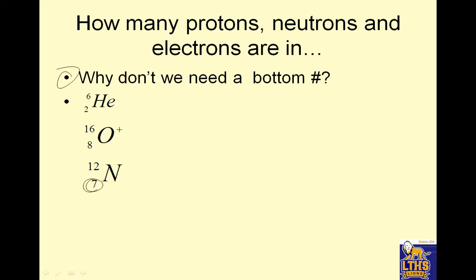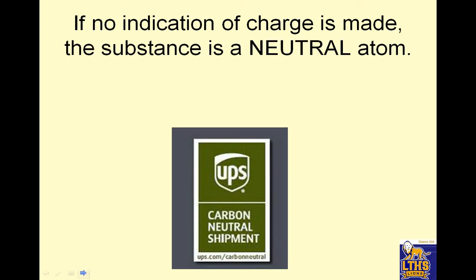By the way, we don't need a bottom number if I just said it's helium 6. Because when you look on the periodic table, you look at helium and the number of protons from the periodic table is there. So you don't need it. You should be able to find that on your own. If no indication of charge is made, the substance is a neutral atom. That means protons equals electrons. That's normally the case.